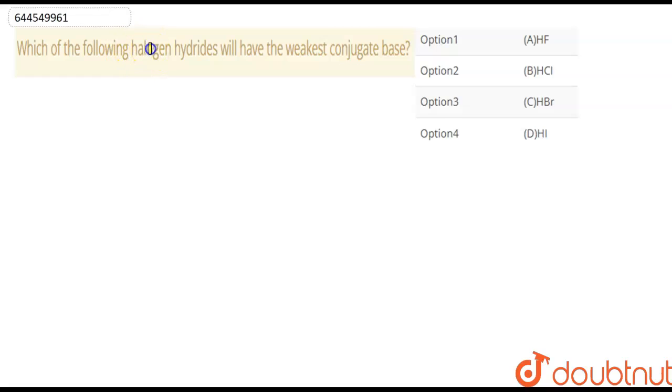Which of the following halogen hydrides will have the weakest conjugate base? First of all, the acids here are HF,